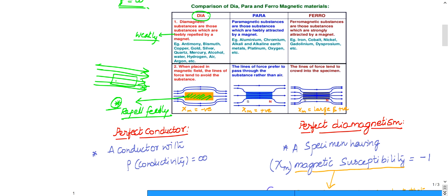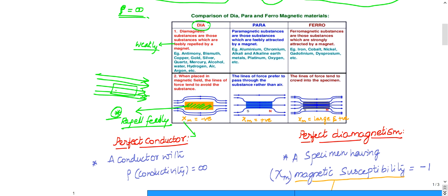Diamagnetic materials are those which are feebly repelled by the magnetic field. For these materials, χm (chi-m), which indicates magnetic susceptibility, is negative. If there is any repulsion, the susceptibility will be negative — I'll explain why in just a minute. Paramagnetic substances are those which are feebly — lightly — attracted by the magnet.